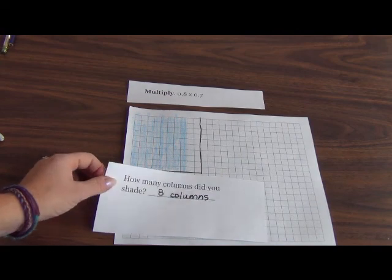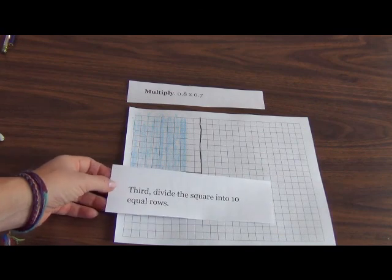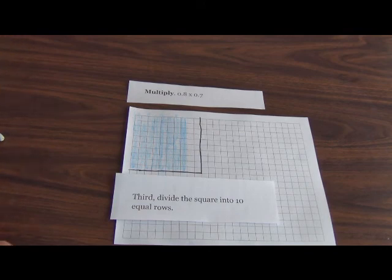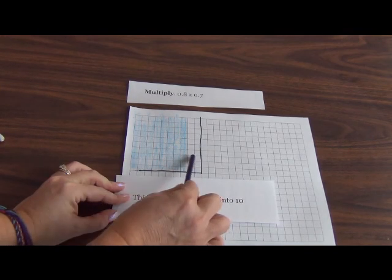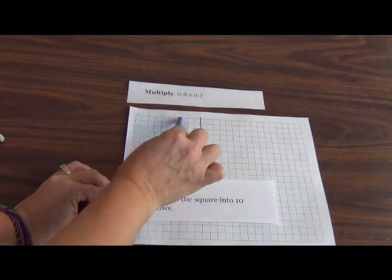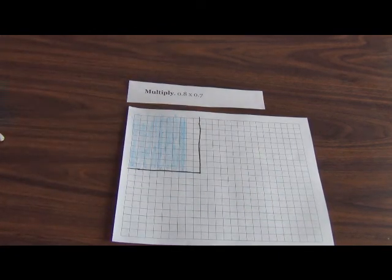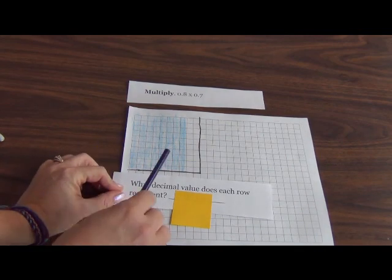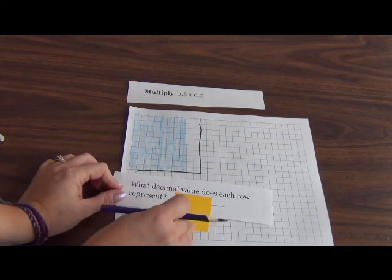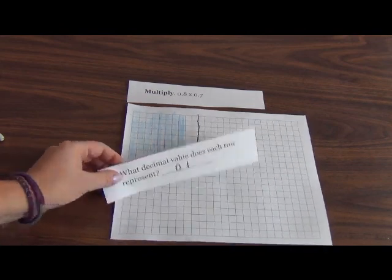Third, we're going to divide the square into ten equal rows. Now, because this is a grid, that's already been done for us. Look, we've got 1, 2, 3, 4, 5, 6, 7, 8, 9, 10 equal rows. What decimal value does each row represent? If I've got ten of them, they each represent 1/10. We knew that. Pat yourself on the back again.